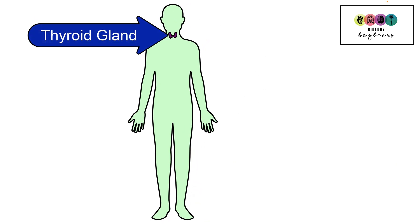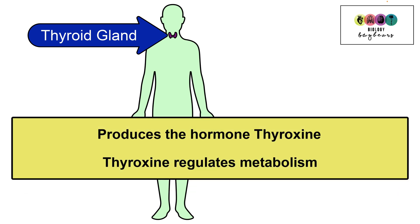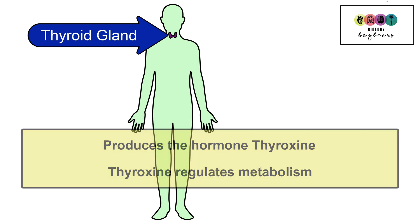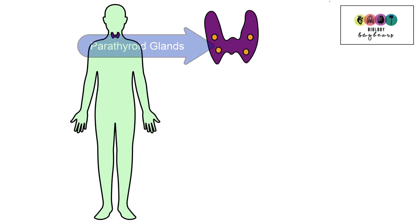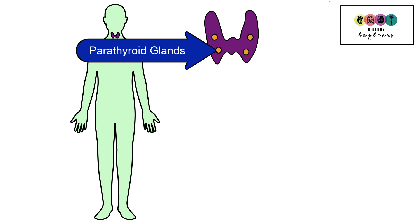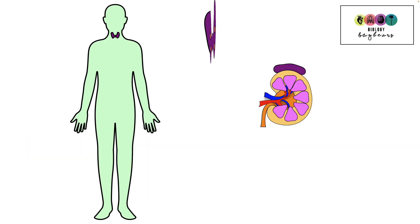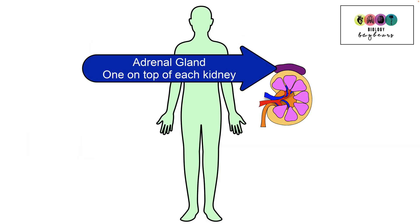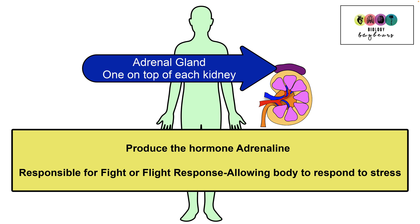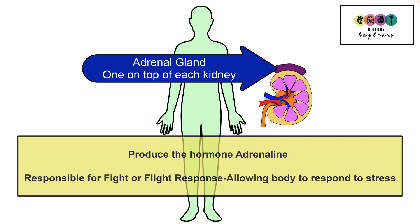At the front of the neck is the thyroid gland, shaped a bit like a butterfly. It produces the hormone thyroxine, which is very important — it regulates metabolism. On the back of your thyroid gland are four smaller glands known as the parathyroid glands; they produce the hormone parathormone and it controls blood calcium levels. Located on the top of each kidney is an adrenal gland, and each adrenal gland produces the hormone adrenaline, which is responsible for your fight or flight response, enabling your body to respond to stress.